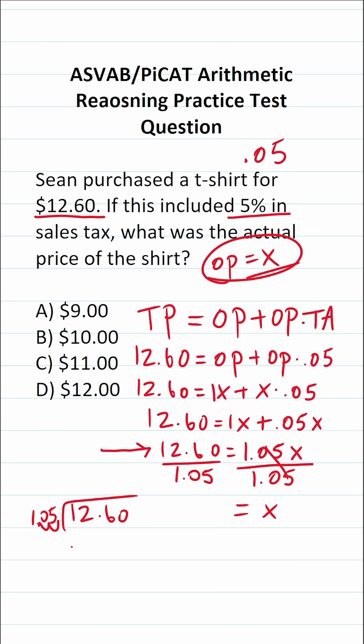And at the same time, I have to move the decimal in 12.60, a corresponding number of times to the right, such that it becomes 1260. All right, now we can go ahead and do our long division.